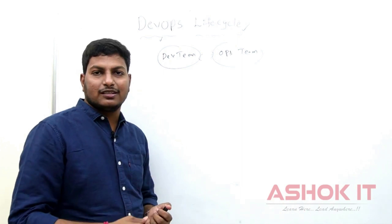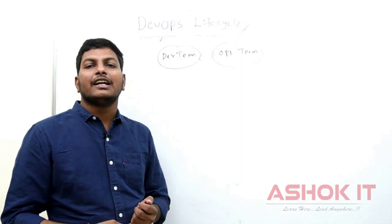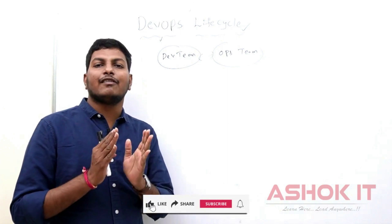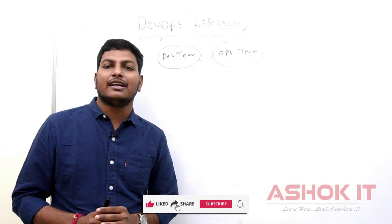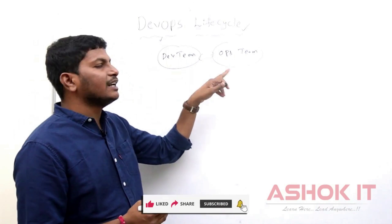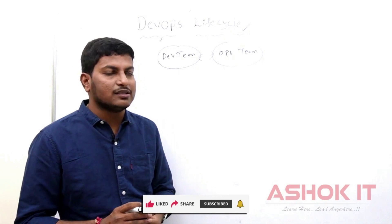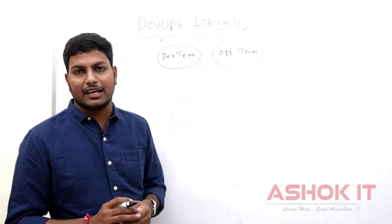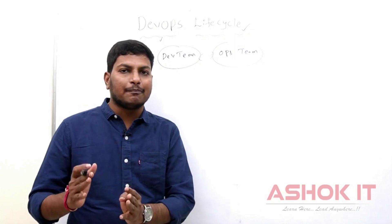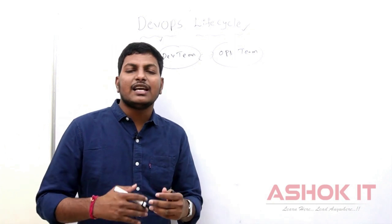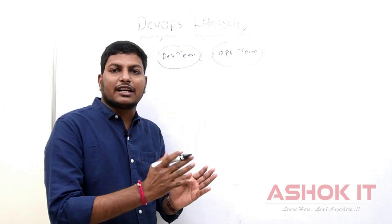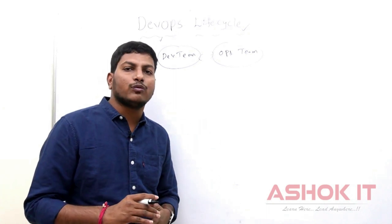We can call DevOps a process, DevOps is a methodology. DevOps is nothing but a set of practices to simplify our application development and delivery process. Here, in order to develop and deliver our applications to the clients, we are going to follow a lifecycle. We can call that the software development lifecycle. A lifecycle is a methodology which represents from starting to ending what work that we have to do.